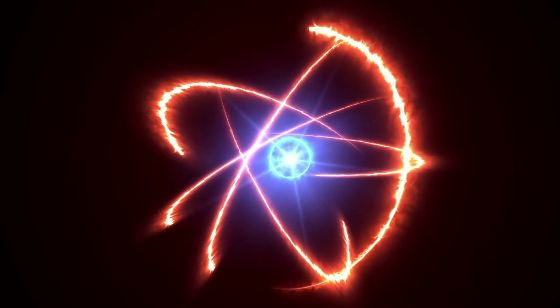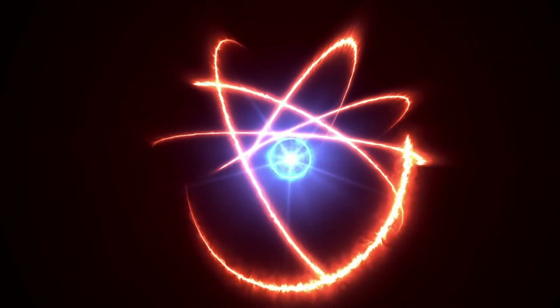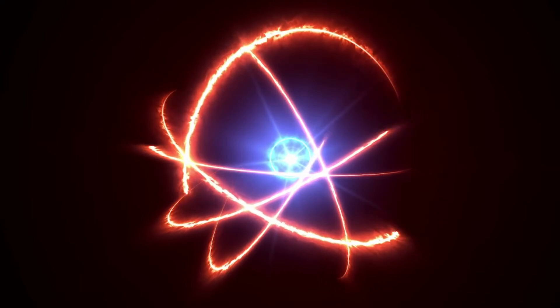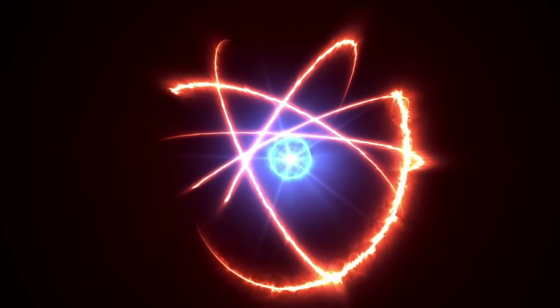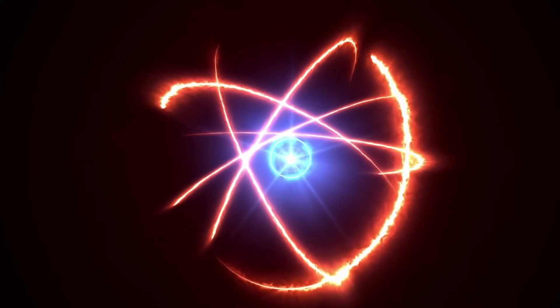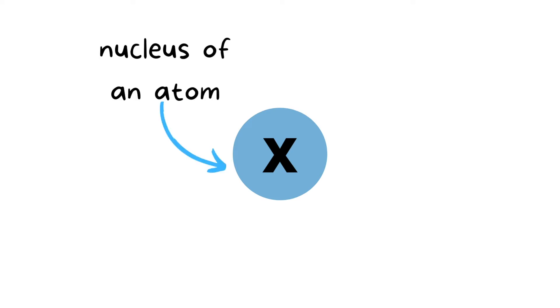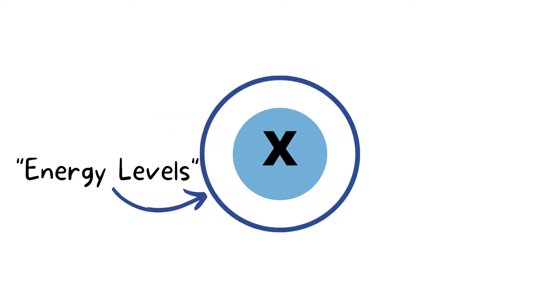So here we have an atom and the things circulating around it are representing three-dimensional spaces that we refer to as energy levels or shells. Orbitals reside in the energy levels and electrons reside on these orbitals. If we freeze this atom it would look something like this — the nucleus of an atom in the center, with X for now representing the element, and surrounding the nucleus we represent the energy levels with these rings.